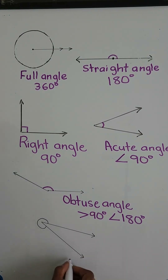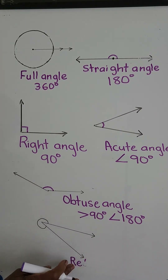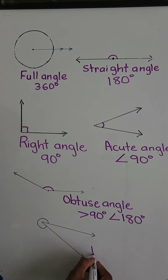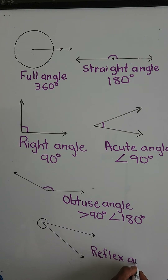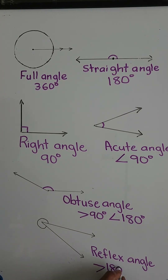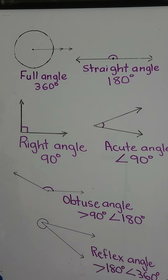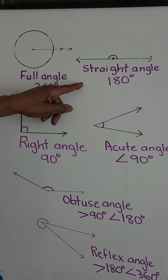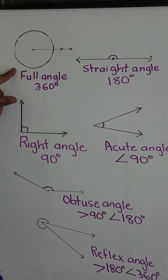And next we have a reflex angle. A reflex angle measures more than 180 degrees, so the reflex angle is more than a straight angle but it is less than a full angle.